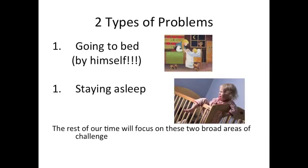Here are two types of problems for BCBAs and BCABAs solving bedtime problems. Category one is going to bed problems; category two is night waking problems. One usually leads to two — going to bed problems usually leads to night waking problems, although night waking problems can occur on their own. Where you want to start is fixing going to bed first — I'll tell you why in a little while.